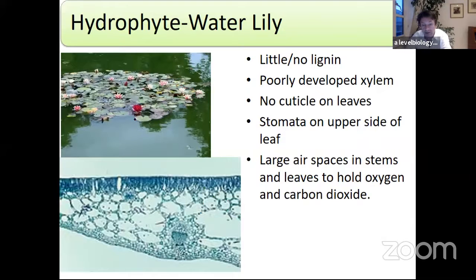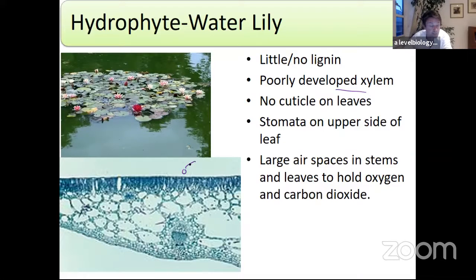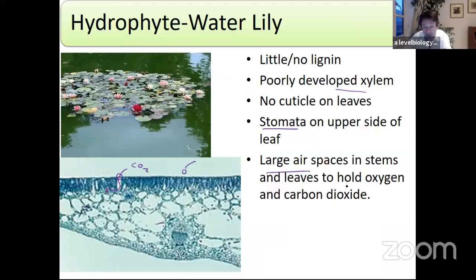Hydrophytes don't have a problem obtaining water. They have a poorly developed xylem. They have no cuticle on the leaves — a cuticle would reflect light and reduce photosynthesis, so they've evolved without one since water is abundant. Stomata are on the upper surface where carbon dioxide from the air can diffuse in for photosynthesis. They also have large air spaces in stems and leaves to hold oxygen and carbon dioxide and to make the plant float.